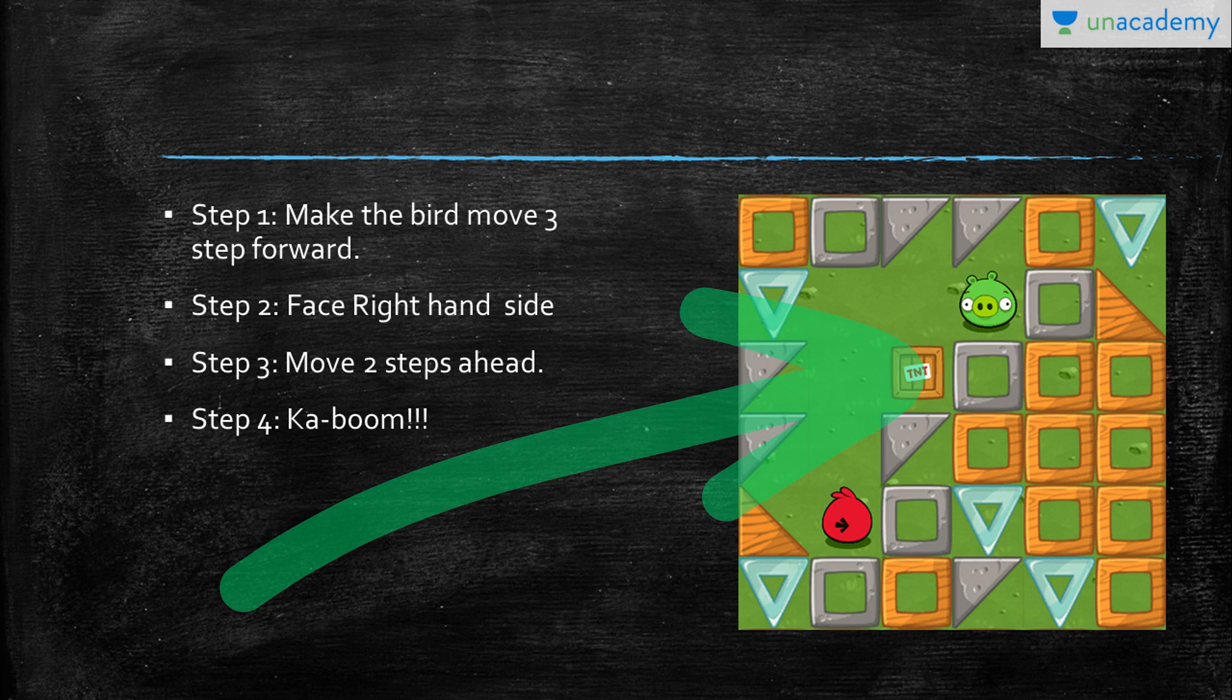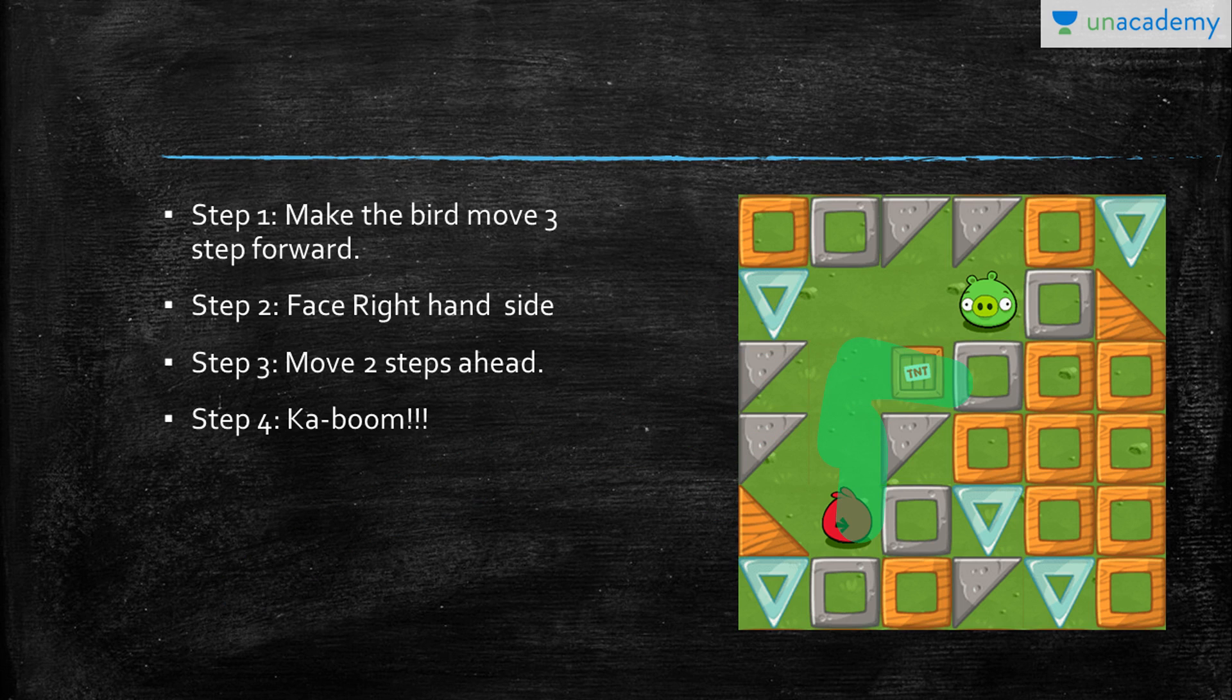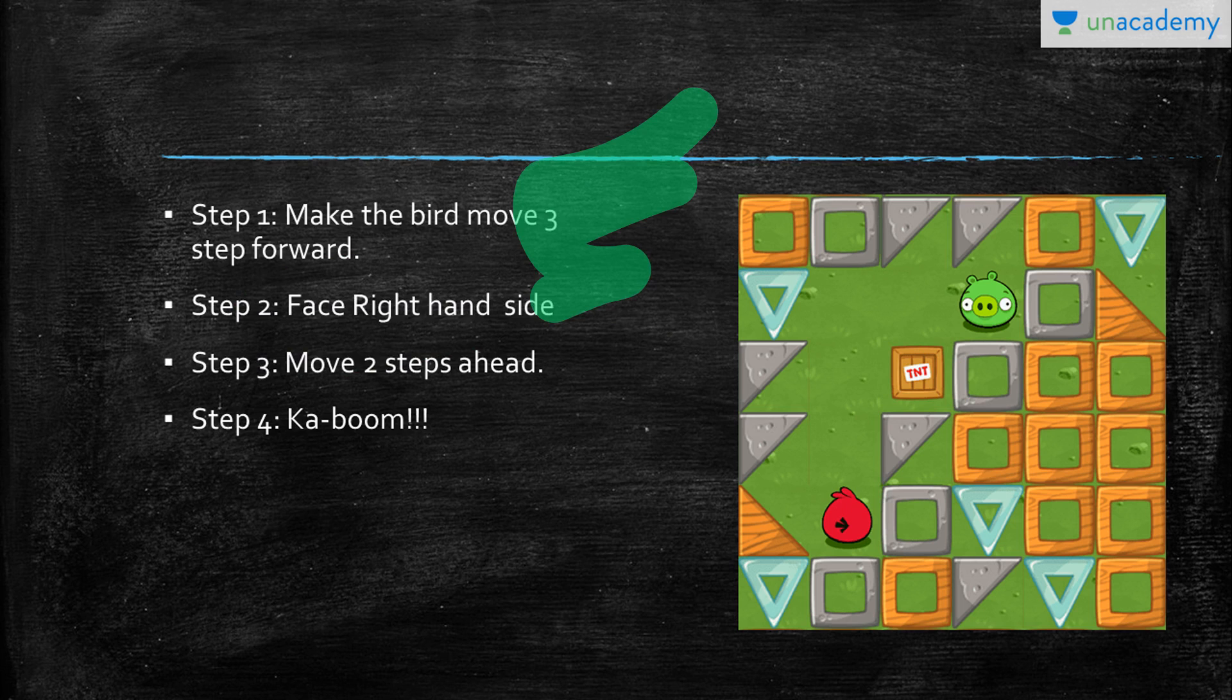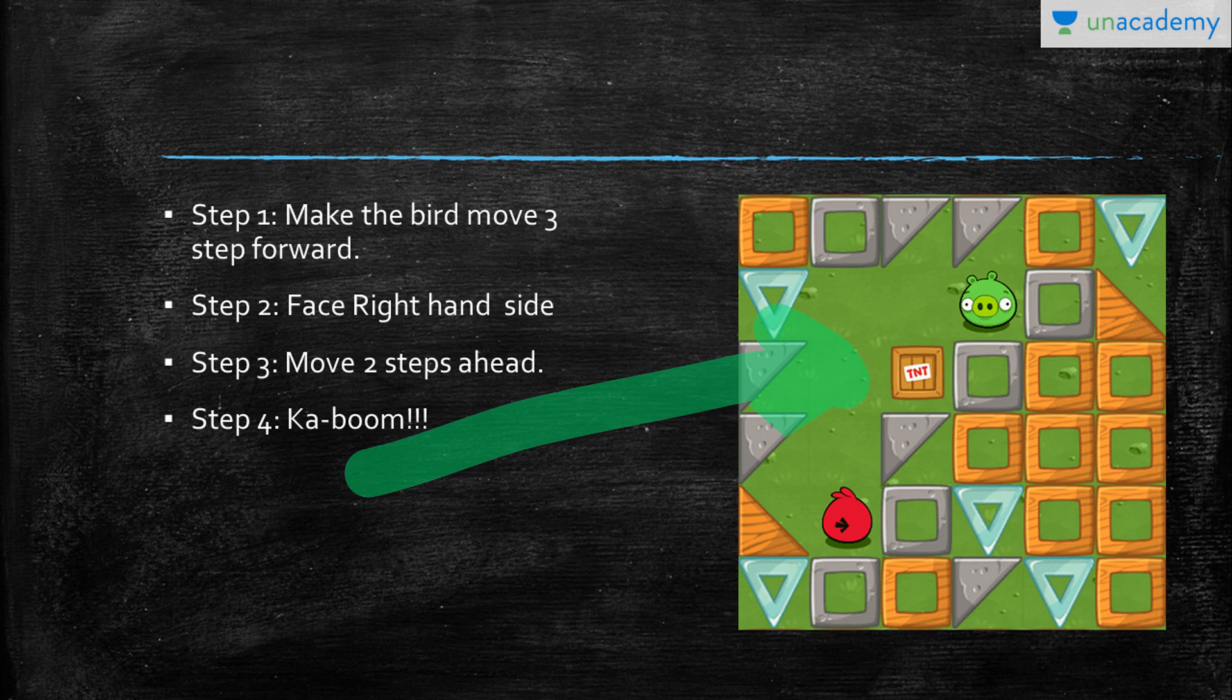Suppose if I give wrong instructions, for example, I just give it to move two steps ahead instead of three. It will end up facing right-hand side over there, and if I walk one more step, it will hit the TNT and my bird will die.